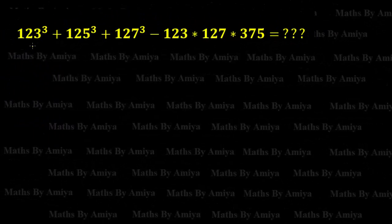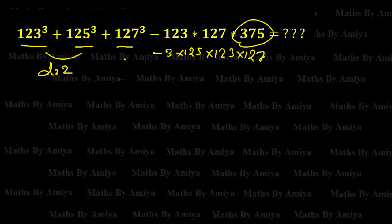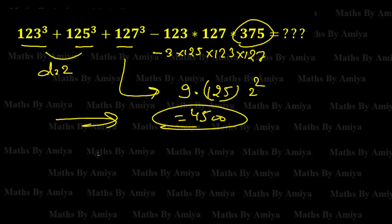Now let's solve our question: 123³ + 125³ + 127³ - 3 × 125 × 123 × 127. This is nothing but a³ + b³ + c³ - 3abc, and they are in AP with a gap of 2. So the common difference is 2, and the answer is 9 × b × d² = 9 × 125 × 2² = 9 × 125 × 4 = 4500. This is our answer, and it would hardly take 10 seconds.